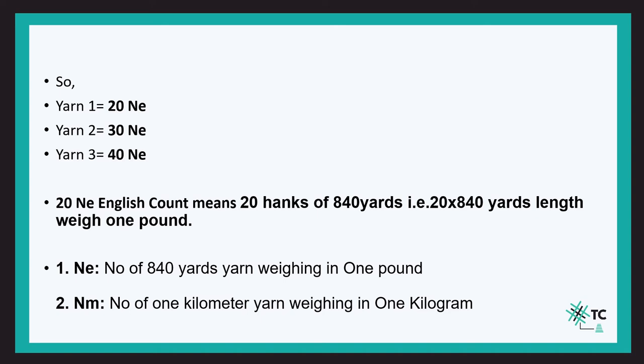Ne is the number of hanks formed of 840 yards from one pound. So we use Ne to indicate the indirect count, just like we used tex in the direct count. 20 Ne (English count) means 20 hanks of 840 yards — that is 20 × 840 = 16,800 yards — of yarn weighs one pound.